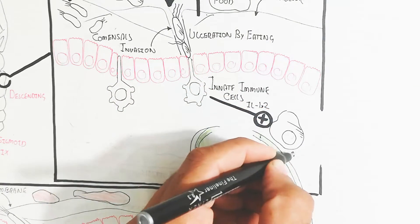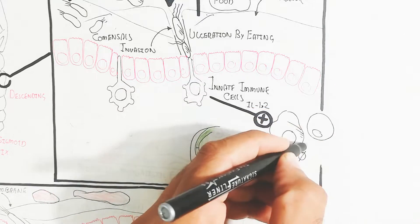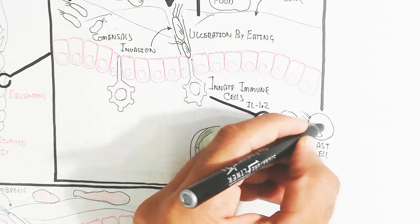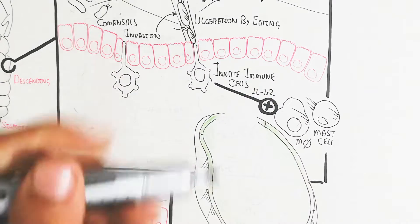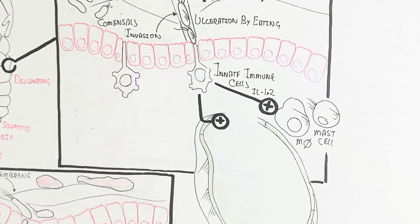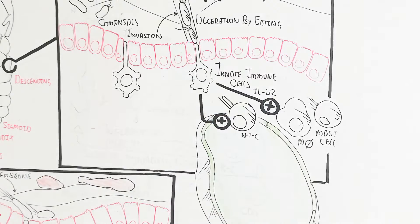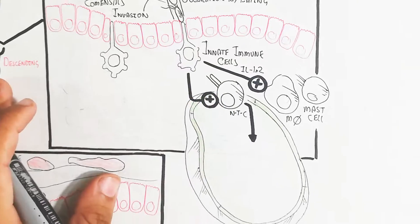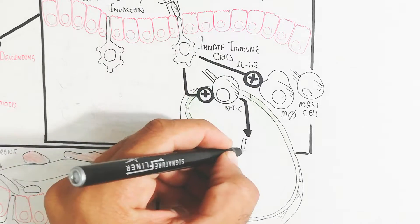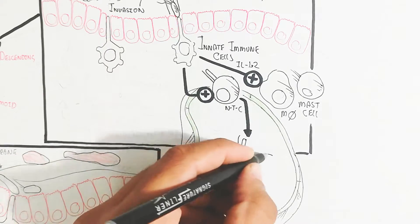The innate immune cells will produce interleukin 1 and 2, which stimulate the macrophage and mast cell and create allergic reactions. This leads to inflammation.